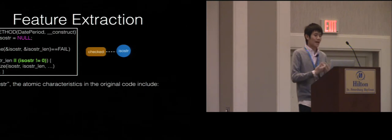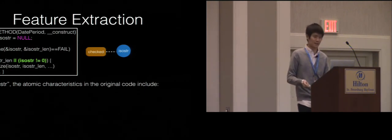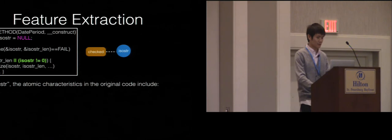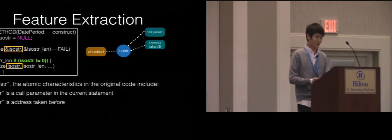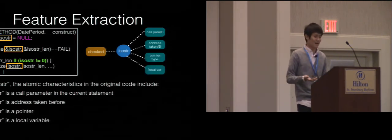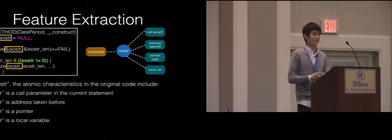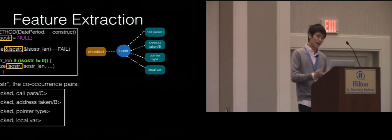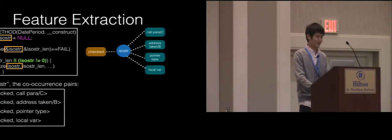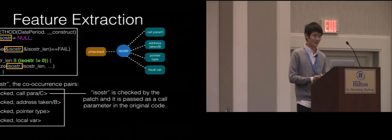If we look at the characteristics in the original code for ISO_STR, they include: it is a call parameter, it is address-taken before, it is a pointer type, and it is a local variable. None of those atomic characteristics alone are powerful enough to tell us whether it's a correct patch. But we can combine them together to form co-occurrence pairs by looking at them in the patch and in the original code. Here we get four pairs, and each pair is quite expressive. For example, the first pair means that ISO_STR is checked by the patch and it is passed as a call parameter in the original code.